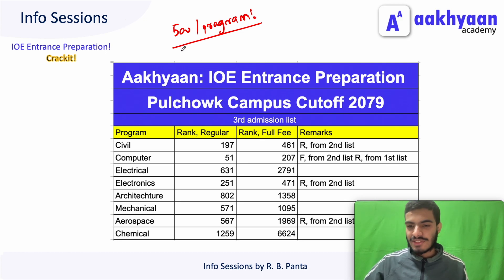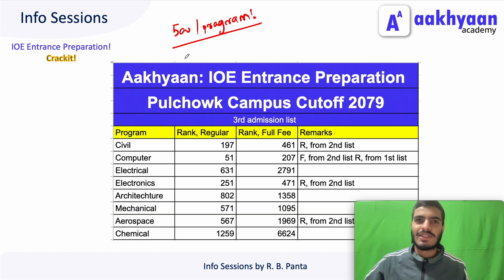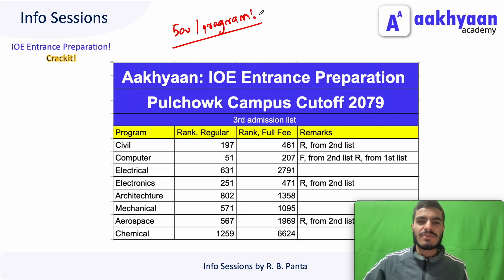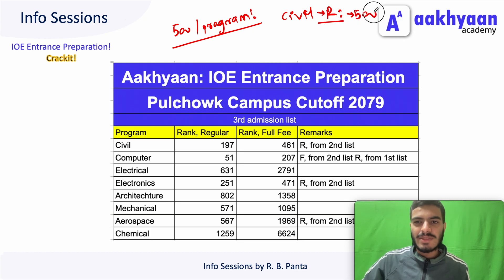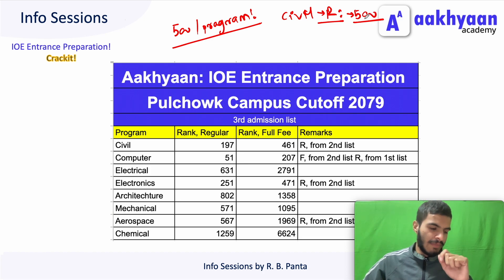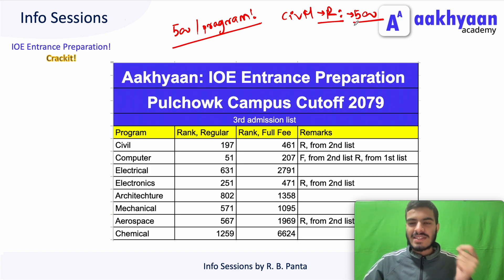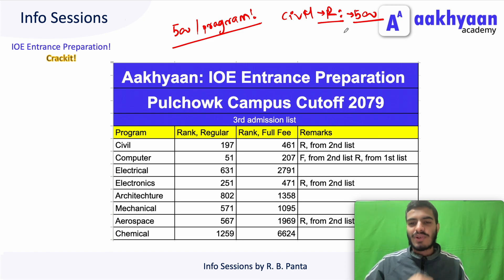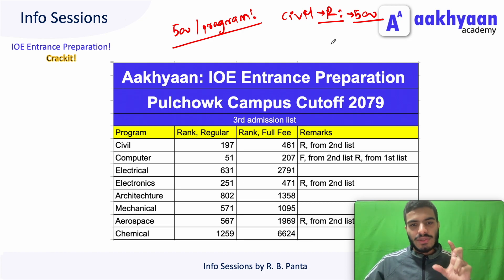In Pulchowk, we need to go to a physical bank. We need to use the new system and do a civil regular form. You need to deposit 50 rupees, and you can do that using the account number for Pulchowk campus or your respective college.